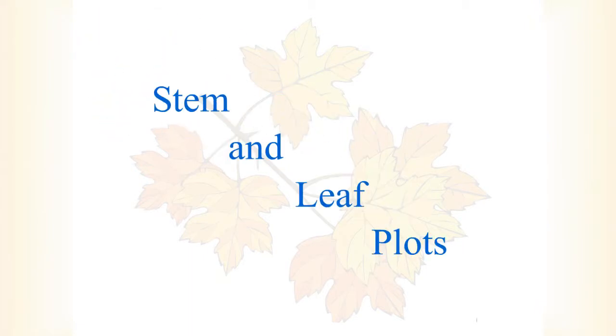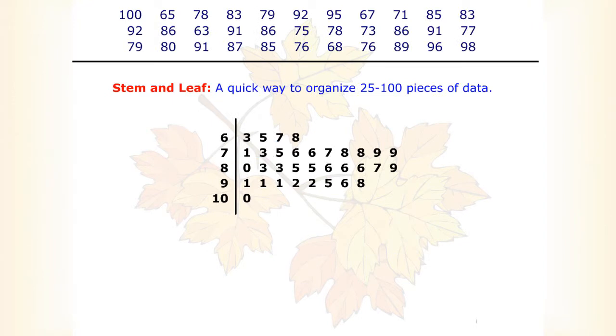Stem and Leaf Plots. A stem and leaf plot is a quick way to organize 25 to 100 pieces of data. Each data value is split into a stem and a leaf.